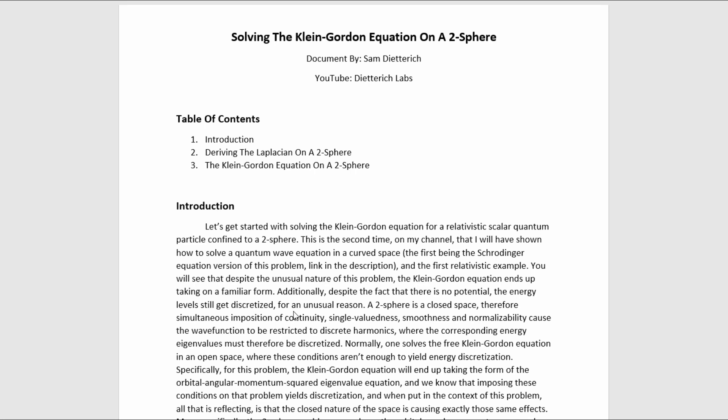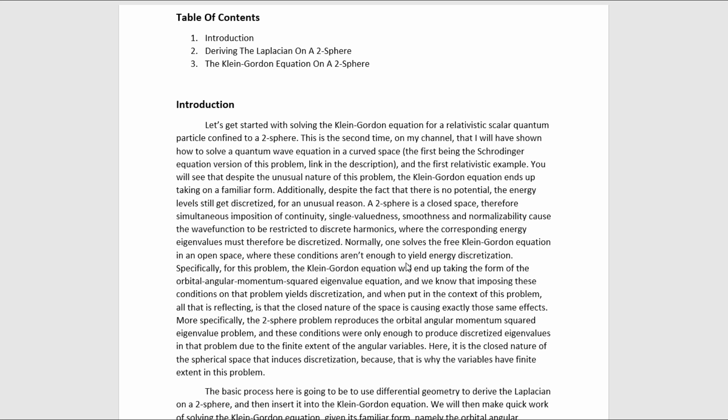Additionally, despite the fact that there is no potential, the energy levels still get discretized for an unusual reason. A 2-sphere is a closed space, therefore simultaneous imposition of continuity, single-valuedness, smoothness, and normalizability cause the wave function to be restricted to discrete harmonics, where the corresponding energy eigenvalues must therefore be discretized. Normally, one solves the free Klein-Gordon equation in an open space where these conditions aren't enough to yield energy discretization.